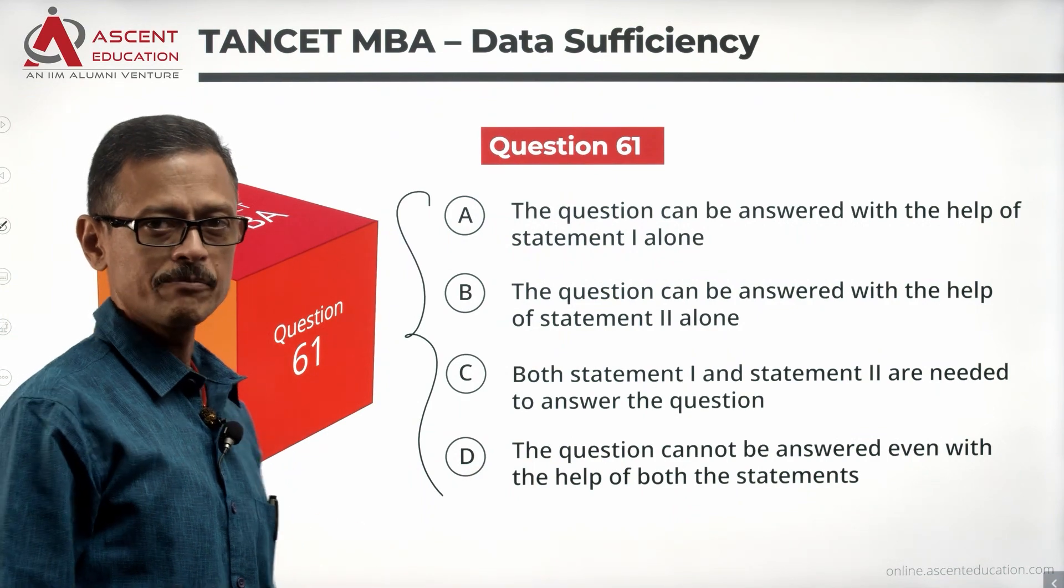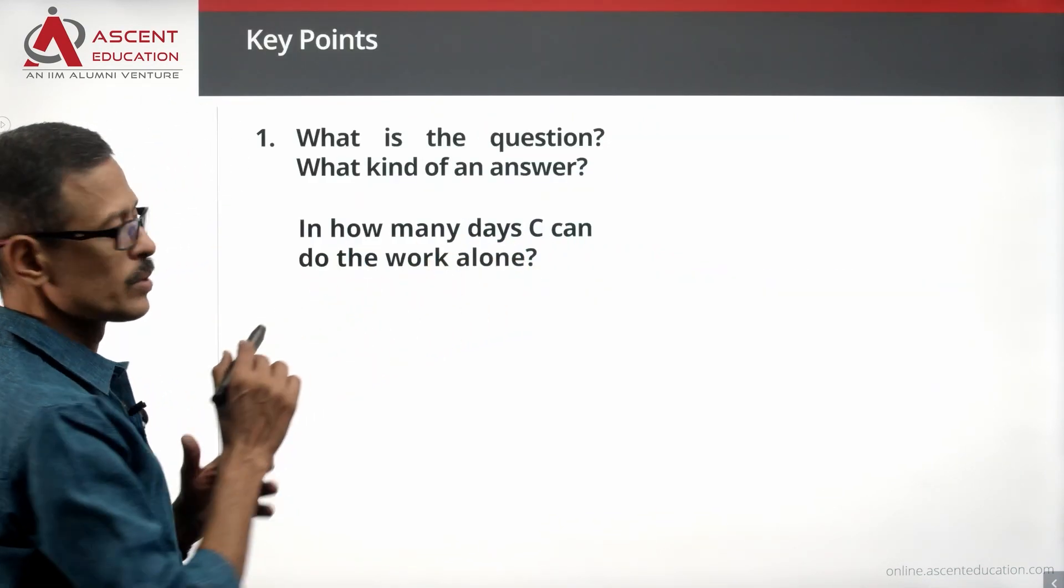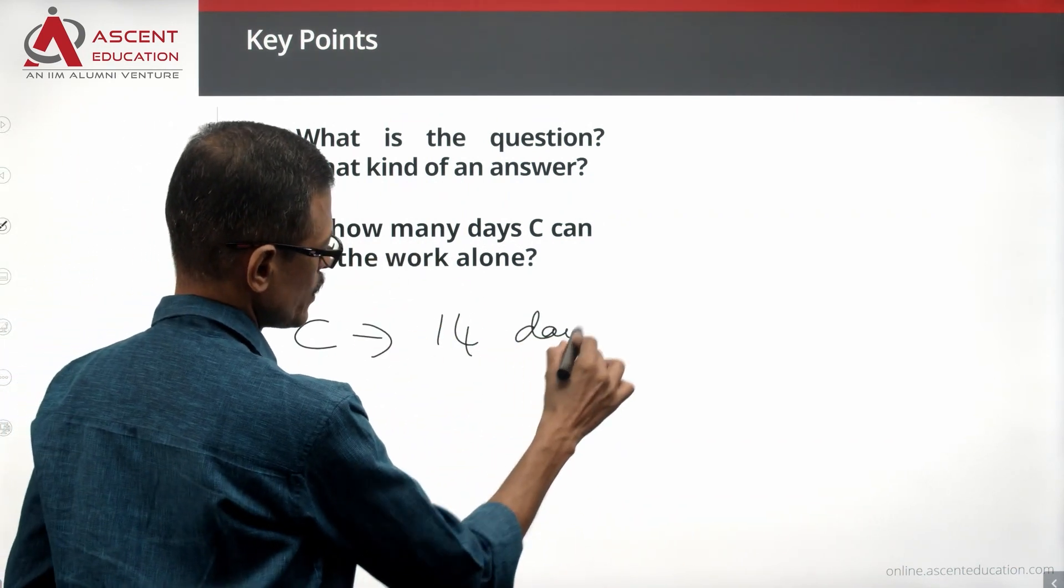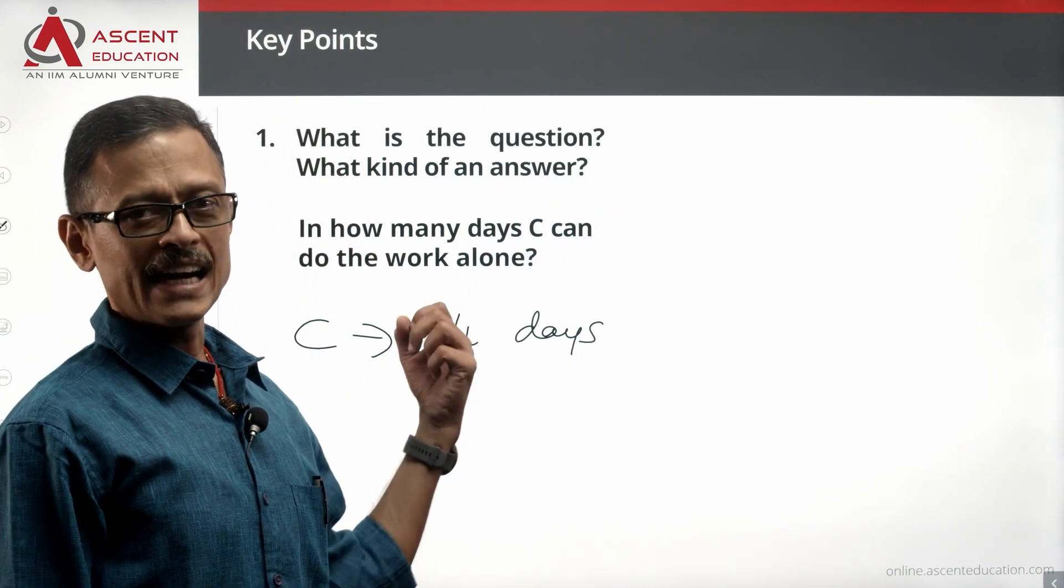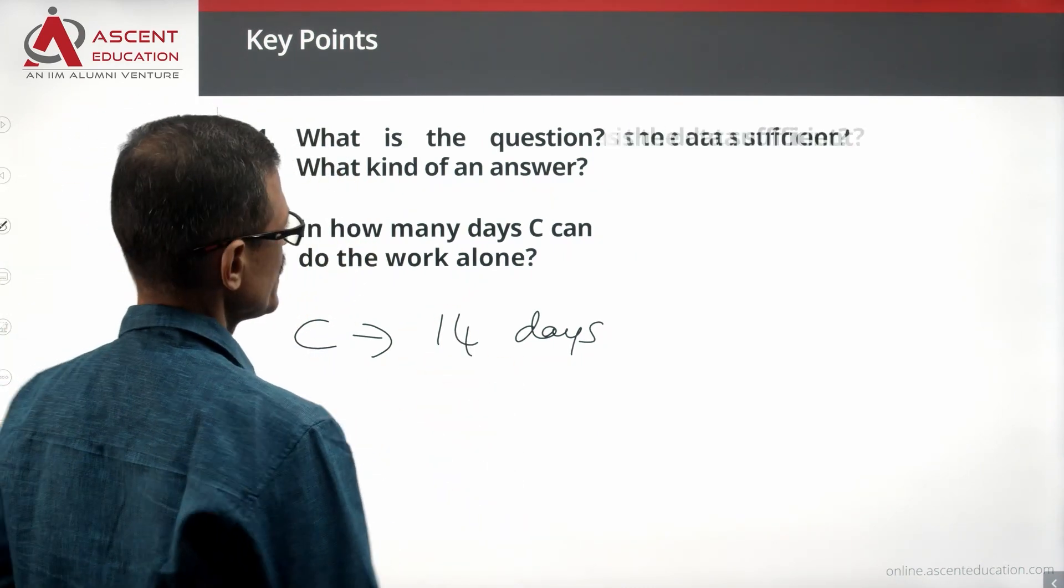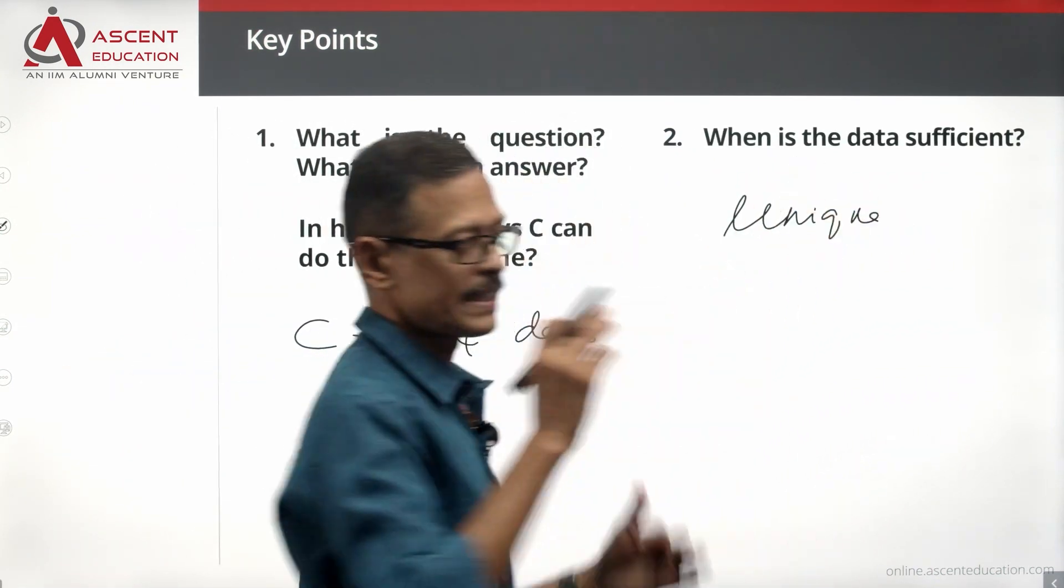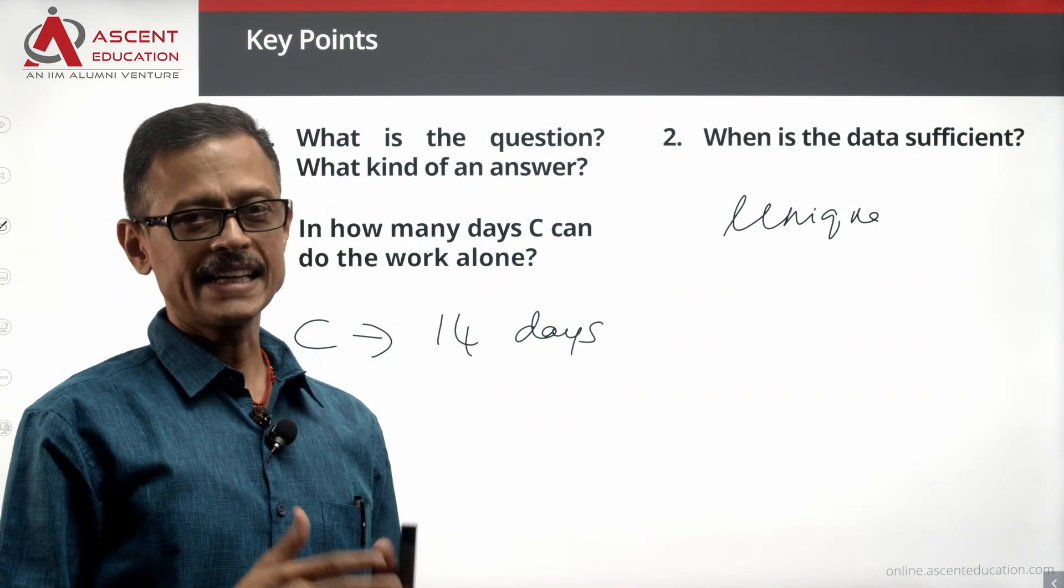Go back to the question. What is the question? In how many days can C do the work alone? So the answer should say C alone can do the work in 14 days, C alone can do the work in 34 days. If the answer is a number, the data is sufficient when we have a unique value.